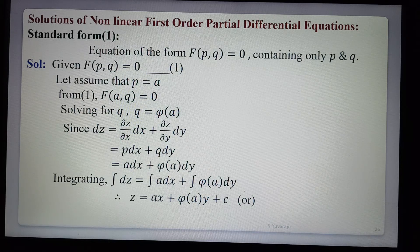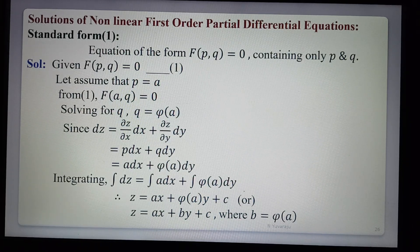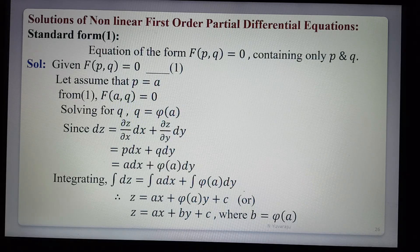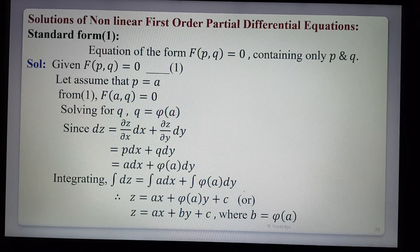This solution can also be written in the form z = ax + by + c, where b = φ(a). By eliminating a or b — since b is a function of a — we substitute directly into this solution to get the required general solution of the given equation of first standard form f(p, q) = 0.